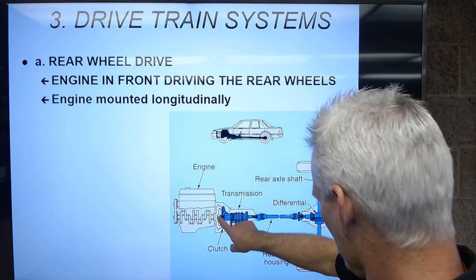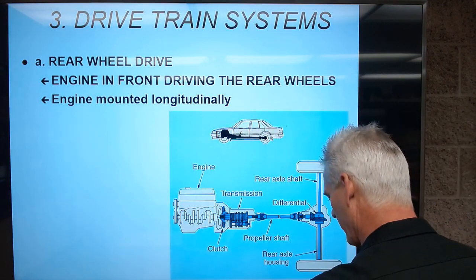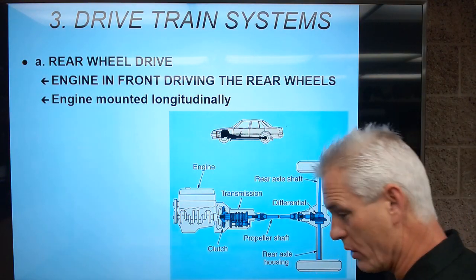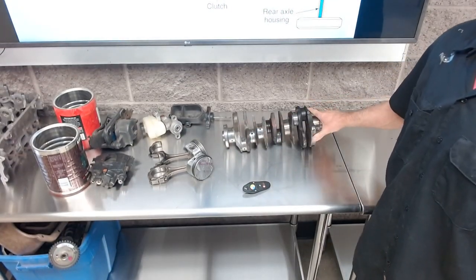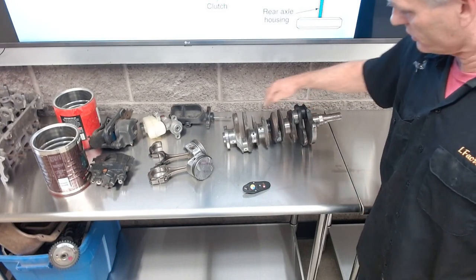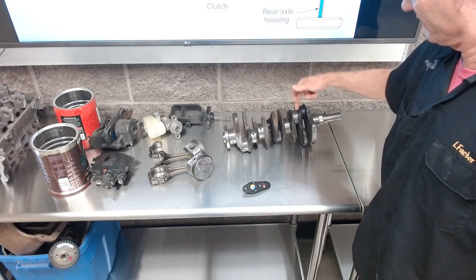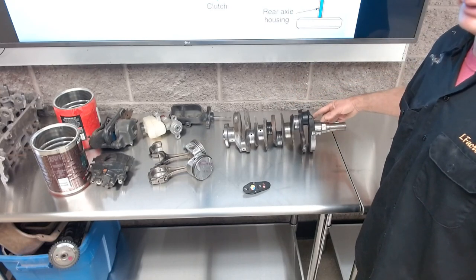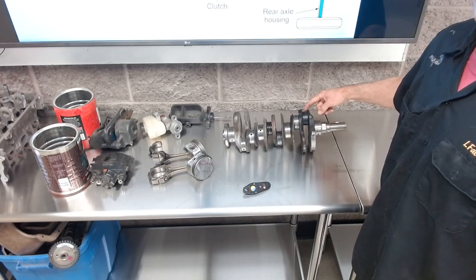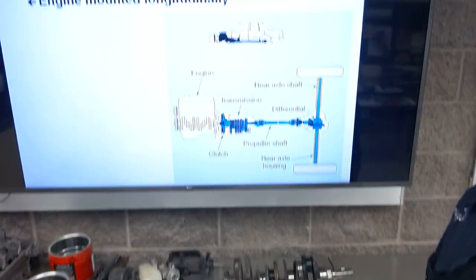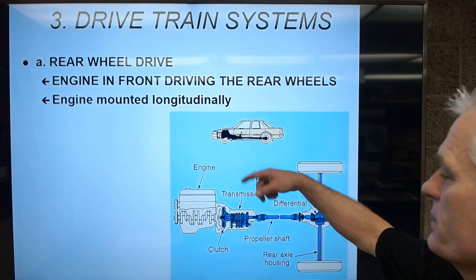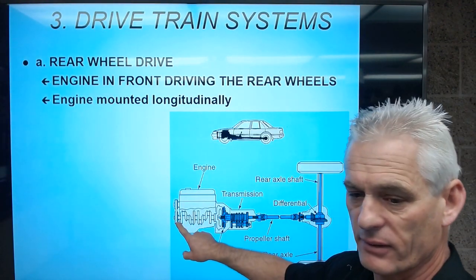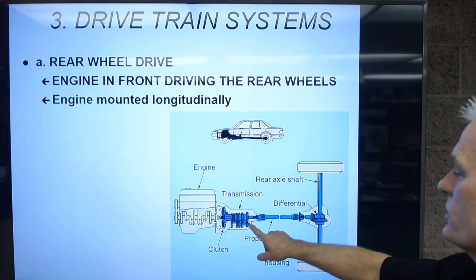That funny-looking shape is the crankshaft, and I've got one right here on the table to show you. There's a crankshaft — you can see the main journals and what we call rod journals. This one is all black and blue because it ran out of oil, which is what was wrong with the car — it ran out of oil and spun what we call a rod bearing. A longitudinal engine is mounted front to back, with the crankshaft at the front. Behind the engine is a transmission and then a driveshaft.